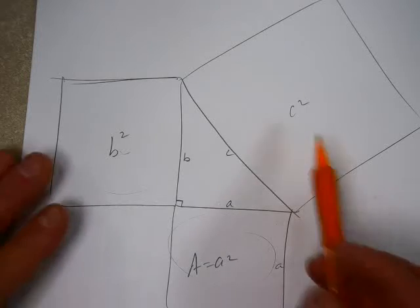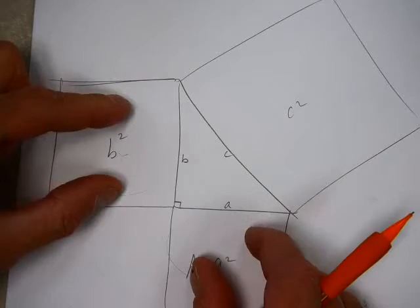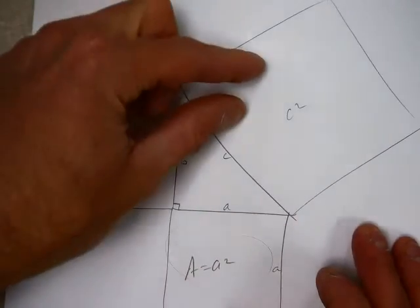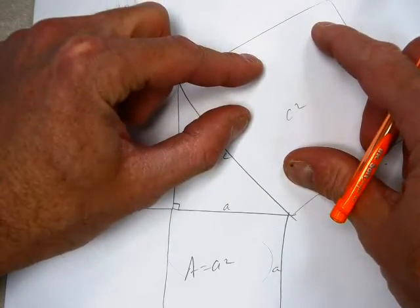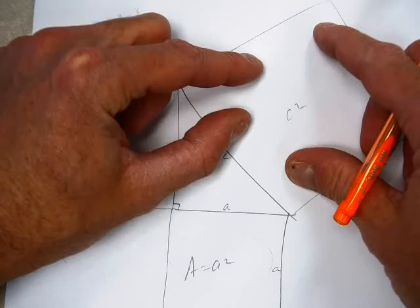They should add them up. So what you should be able to do is take your two squares, cut them up, and fit them and cover up your hypotenuse square. Okay?